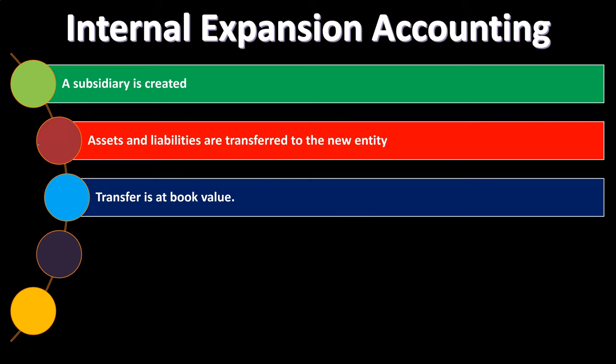The key point here is that assets and liabilities are going to be transferred at book value. You might be thinking — after looking at the external expansion where two separate entities come together and we use the acquisition method, treating it basically like a sale happening at that point in time — why is it the case that we're putting book value into that new entity? Whereas if we had two separate entities, we used an acquisition method, which you can think of as a kind of market transaction. If you have two separate entities coming together, you basically have a sale.